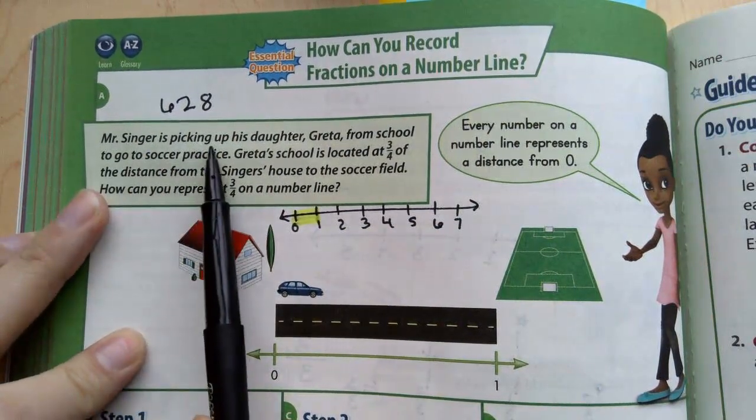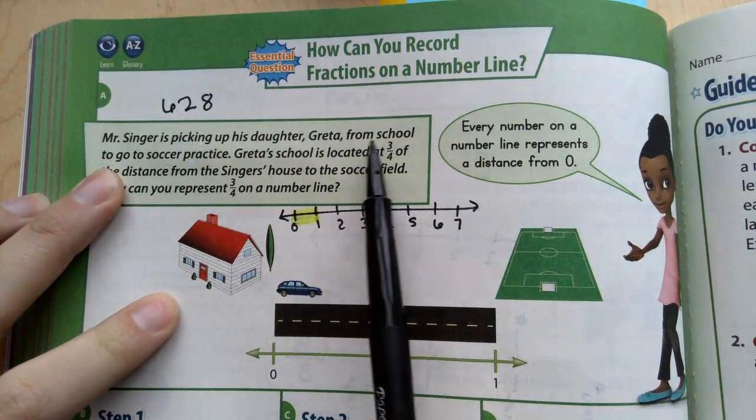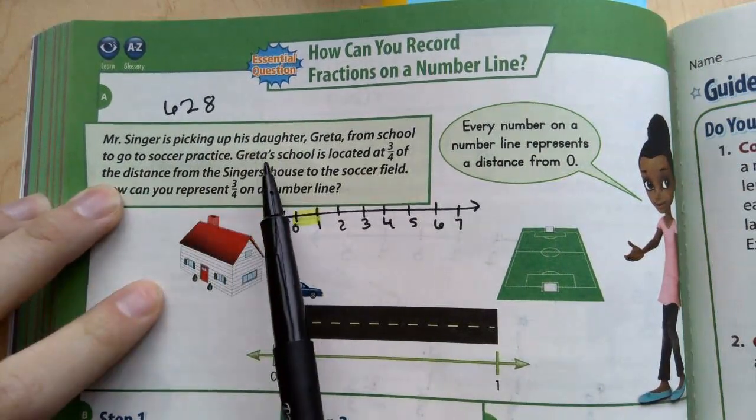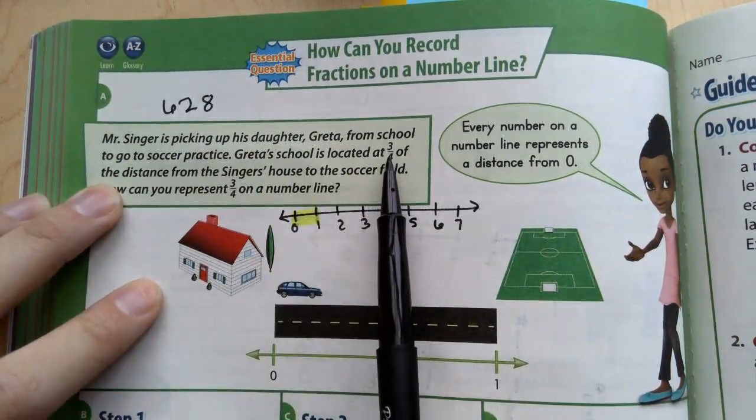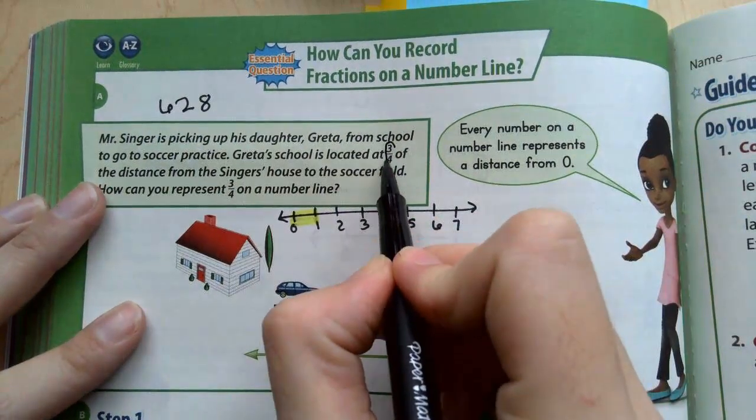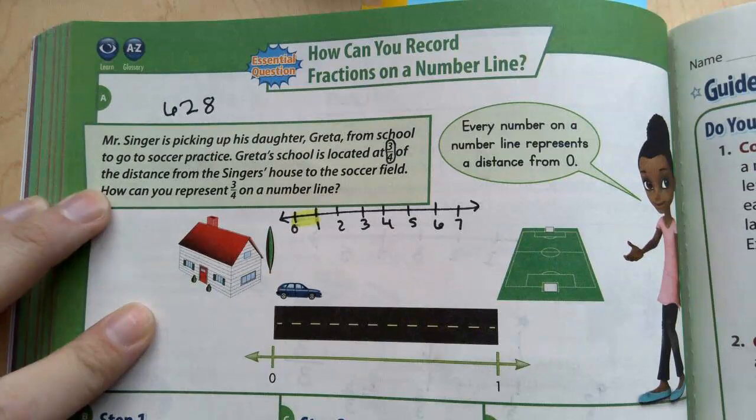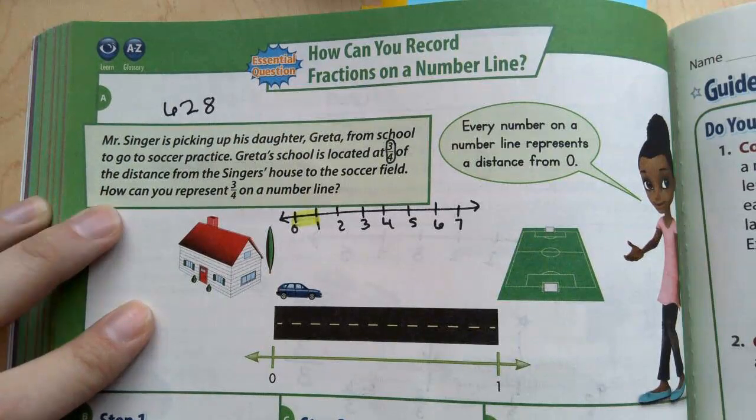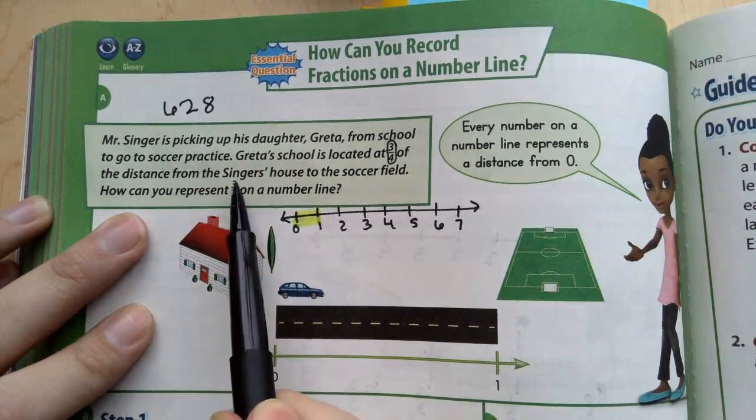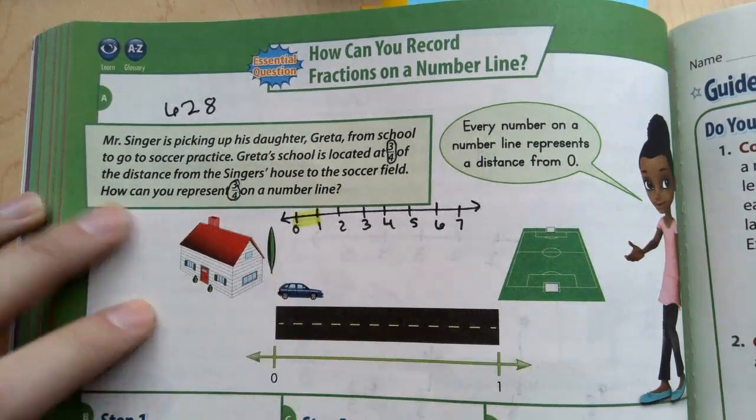Mr. Singer is picking up his daughter, Greta, from school to go to soccer practice. Greta's school is located 3/4, circle 3/4, of the distance from the Singer's house to the soccer field. How can you represent 3/4 on a number line?